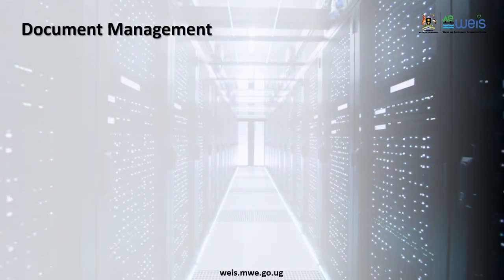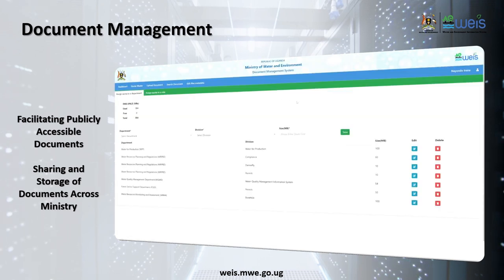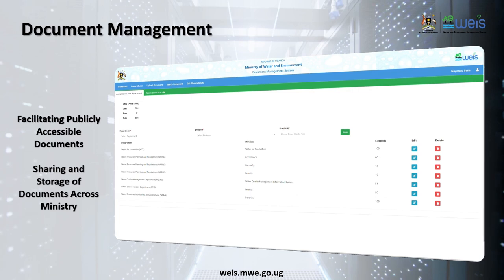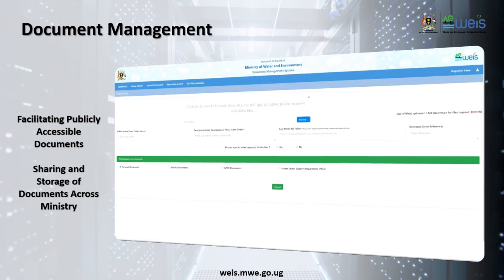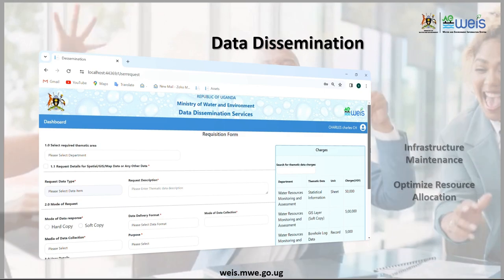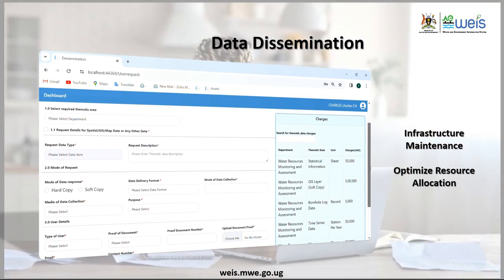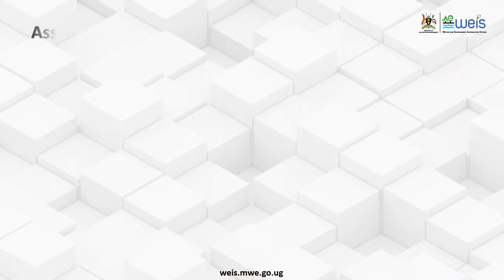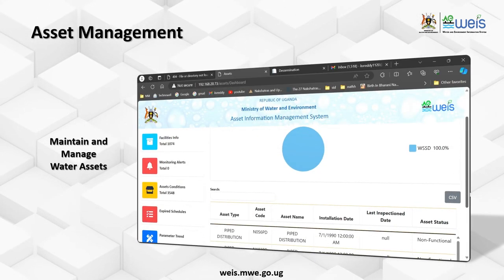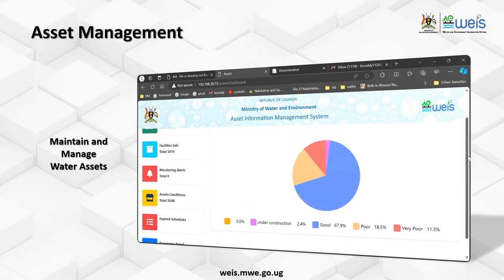Keeping track of documents is streamlined with the Document Management Portal in WEEZ, ensuring administrative efficiency and data accuracy. The data dissemination portal ensures relevant data reaches stakeholders efficiently, promoting transparency and collaboration. Manage water assets effectively with the Assets Management Portal in WEEZ. Stay on top of infrastructure maintenance and optimize resource allocation for sustainable development.